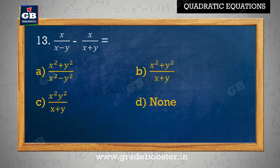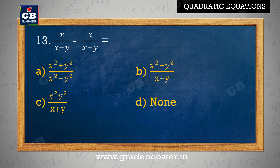Simplify: x by x minus y minus x by x plus y equal to: A. x square plus y square by x square minus y square, B. x square plus y square by x plus y, C. x square y square by x plus y, D. none.